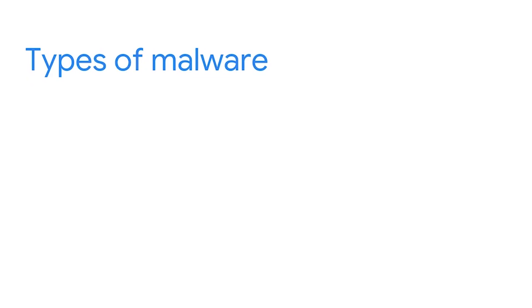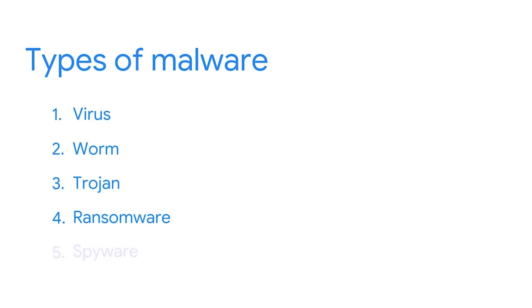Malware has been a threat to people and organizations for a long time. Attackers have created many different strains of malware, and they all vary in how they're spread. Five of the most common types are a virus, worm, trojan, ransomware, and spyware. Let's take a look at how each of them work.